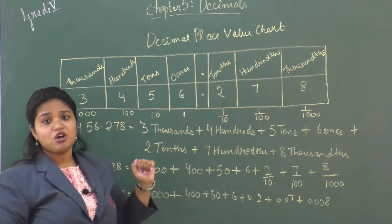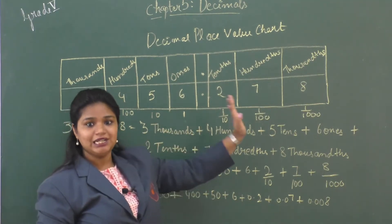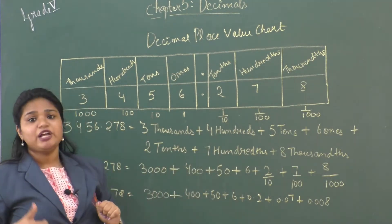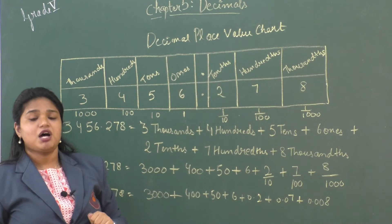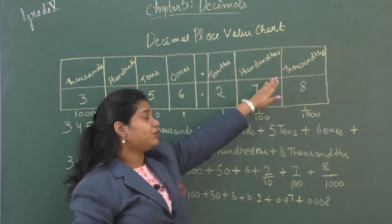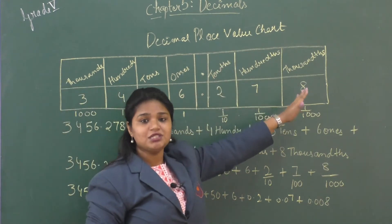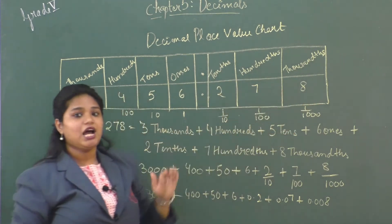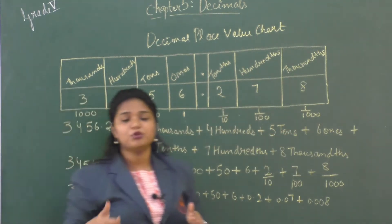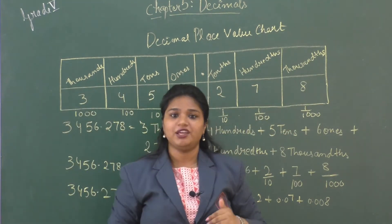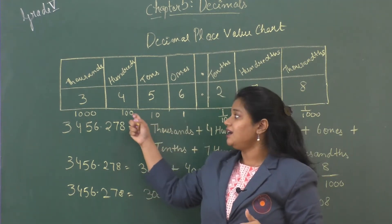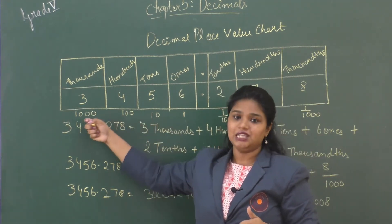Now let's talk about the place value of the decimal part. The place value of the decimal part starts with tenths, hundredths, thousandths, and so on. The place value of the whole number starts from ones, tens, hundreds, thousands.